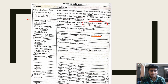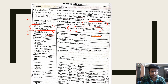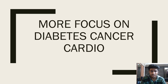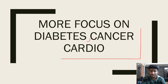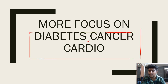2D QSAR, 3D QSAR, CoMFA, CoMSIA for structural activity relationships. BLAST and FASTA are very important. Then Schrödinger and MOE — these two software are important for 3D structure visualization and energy minimization.